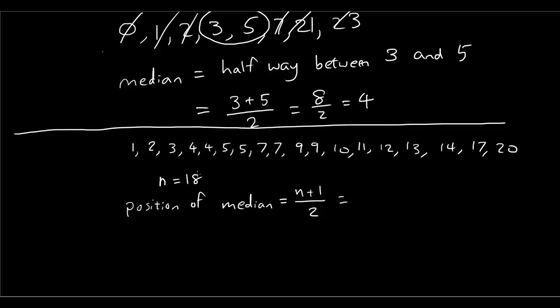So we are going to go n is 18. So we have 18 plus 1 divided by 2. Which is 19 divided by 2. Which is 9.5.